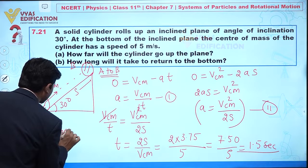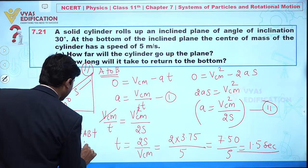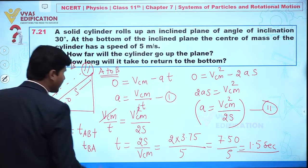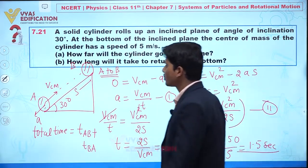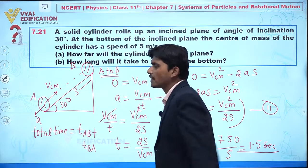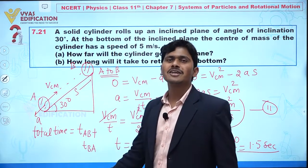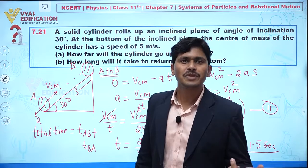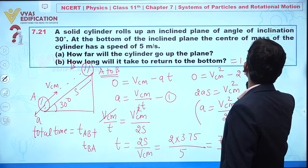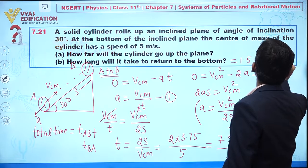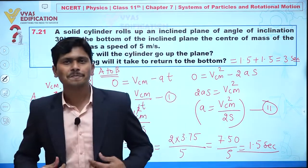The total time is t_AB + t_BA. Since the cylinder takes 1.5 seconds going up, it takes the same time coming back down. Therefore total time = 1.5 + 1.5 = 3 seconds. That is the complete solution to this question.